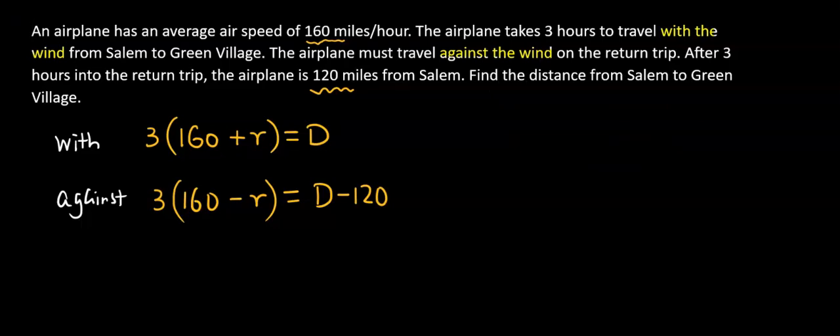It did not ask for r. We definitely can solve for r, but only ask us to solve for d. So let's focus on solving for d. We can eliminate the variable r first. We're going to distribute. So this one we're going to have 480 plus 3r equals d.